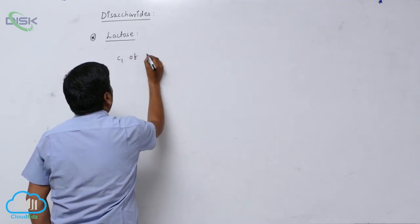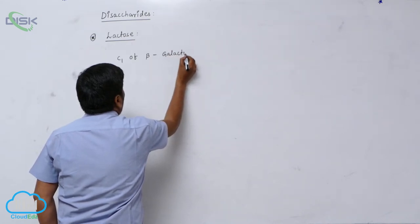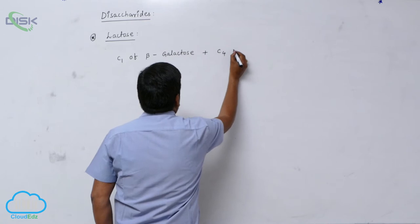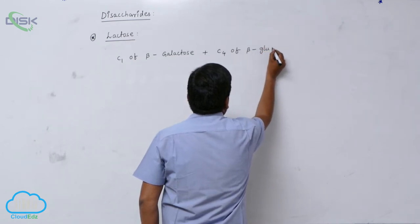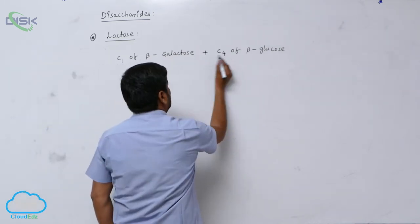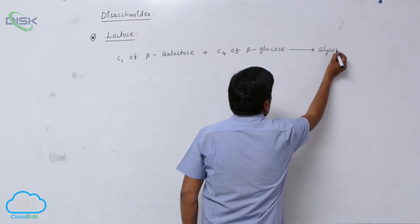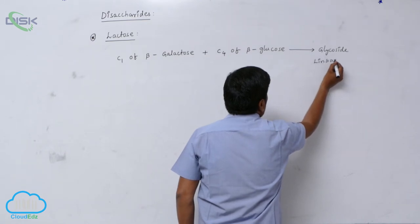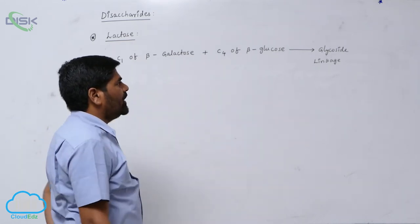C1 carbon of beta-galactose plus C4 carbon of beta-glucose. Due to combination of this, glycosidic linkage is found. Glycosidic linkage between C1 carbon of beta-galactose and C4 carbon of beta-glucose.